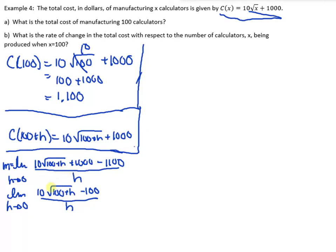Now, as soon as we see the root, always think conjugate. Not all the time it's going to work, but most of the time. We're going to have to use the conjugate. So, the first term as it is, and instead of a minus, we're going to do a plus, and then the second term as it is. So, 10 root 100 plus h plus 100.